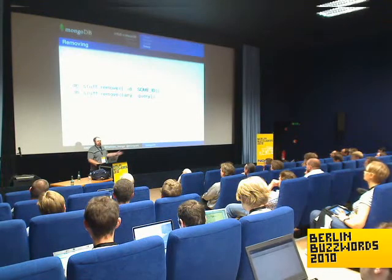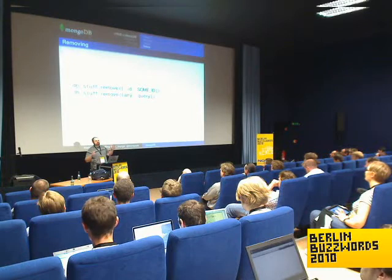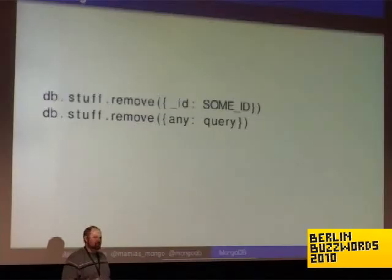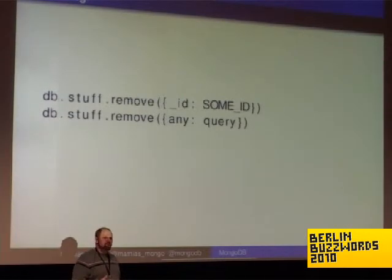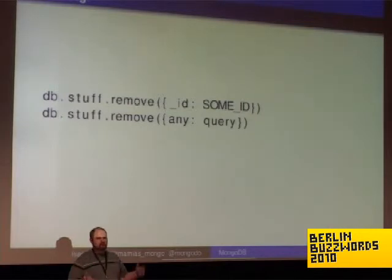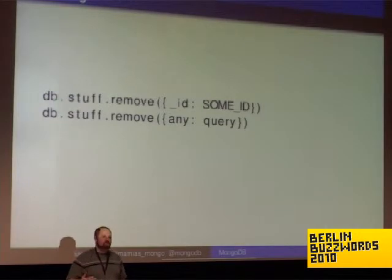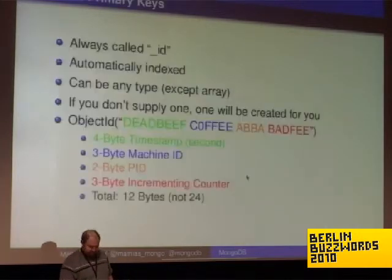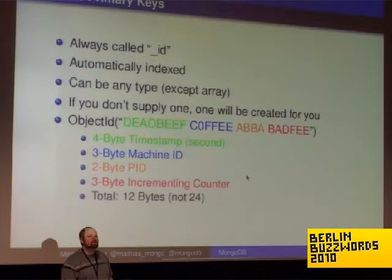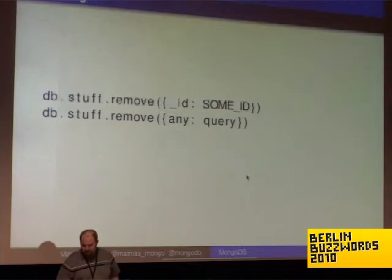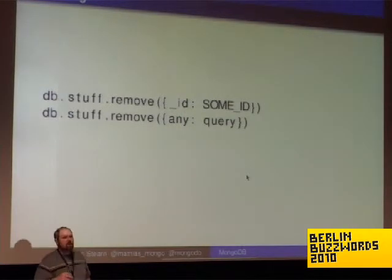Removing is so simple it doesn't even warrant a slide. Just db.stuff.remove with some query and it will remove all matching documents. By default we do this as a background operation. If you want a guarantee, you can specify atomic equals true and it will block the database until it finishes removing.